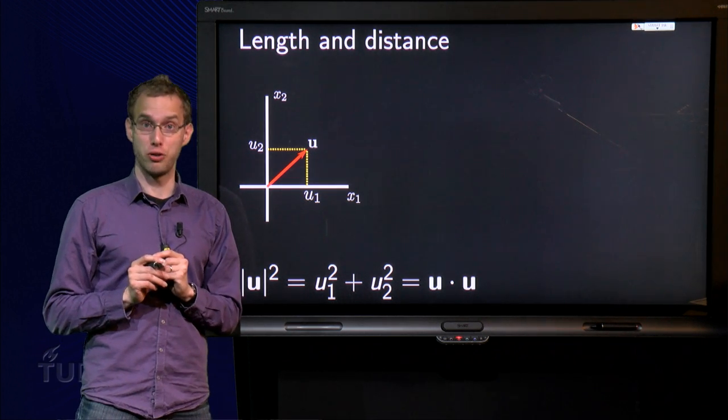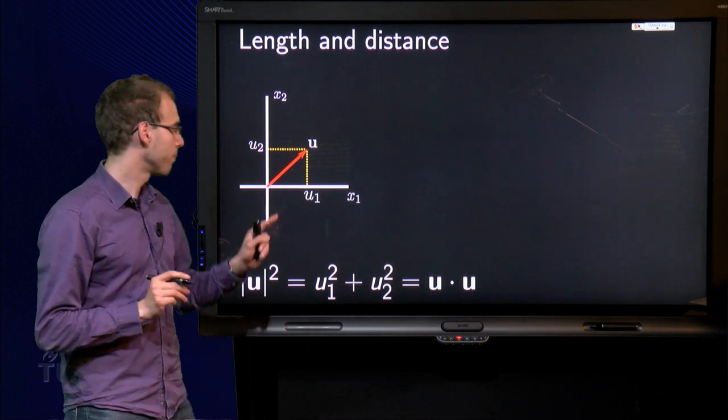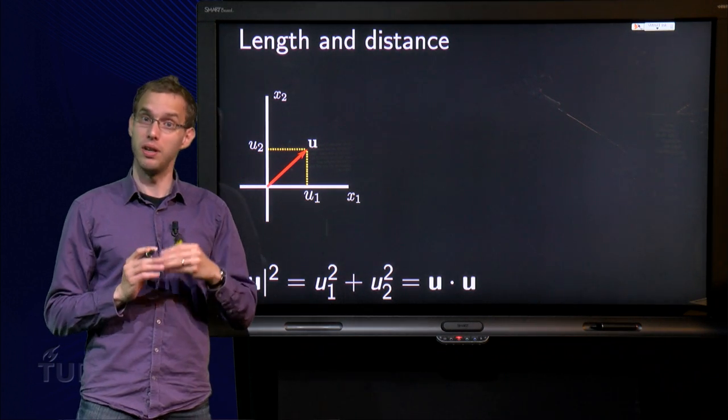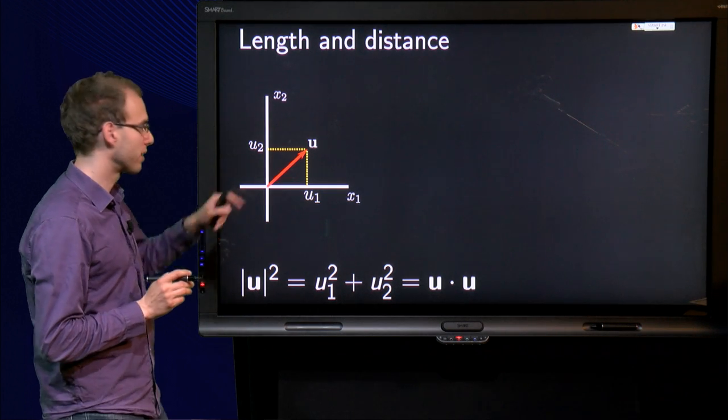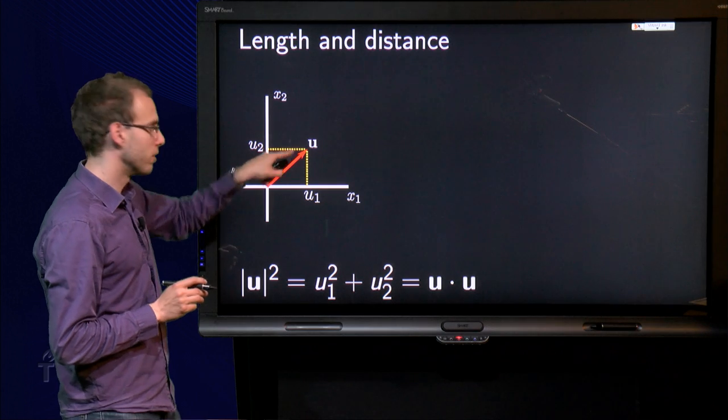Let's look in R2 first. We have a vector u over here with components u1 and u2. Then we know how to compute the length of this vector. The length squared equals u1 squared plus u2 squared.